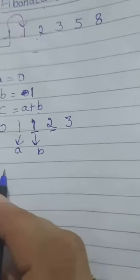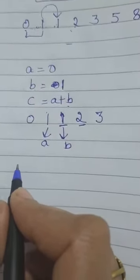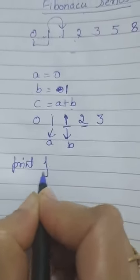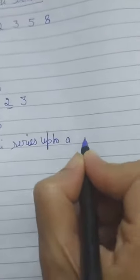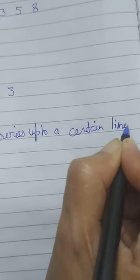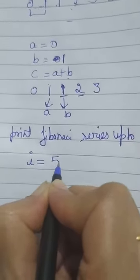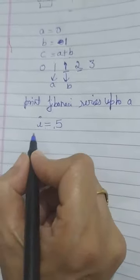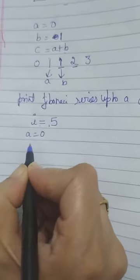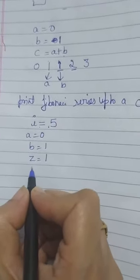Now we will make the program. Suppose we have to print the Fibonacci series up to a certain limit. Suppose we have taken the limit I equals to 5, meaning we have to print the first five values of the Fibonacci series. For this we have taken A equals to 0, B equals to 1, and Z equals to 1.